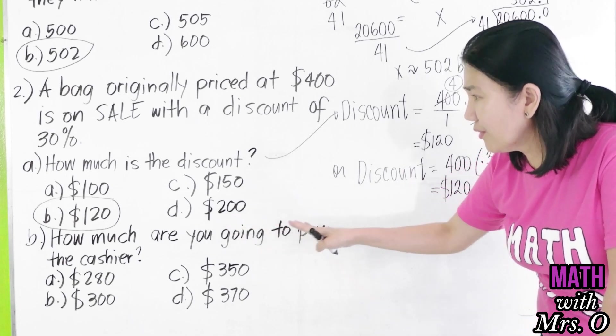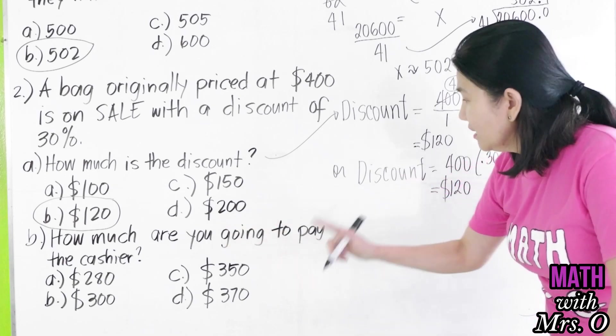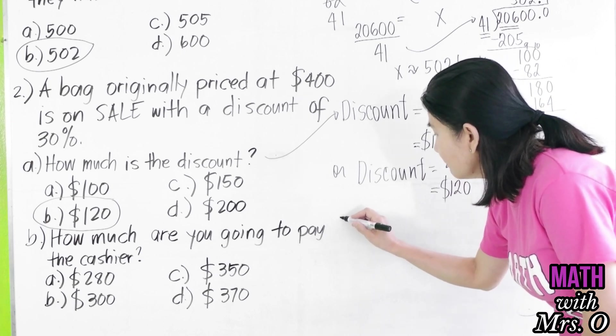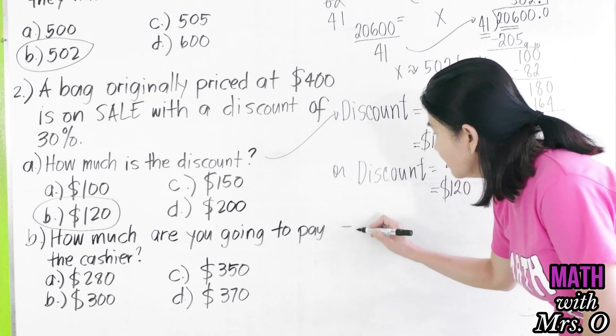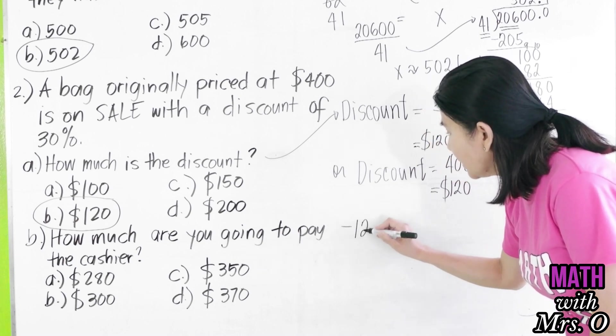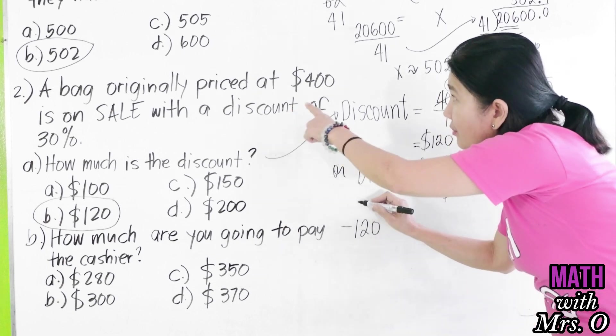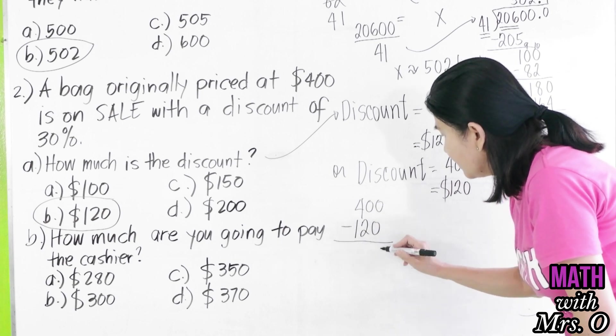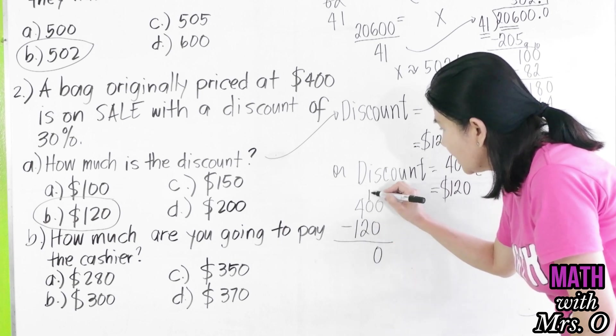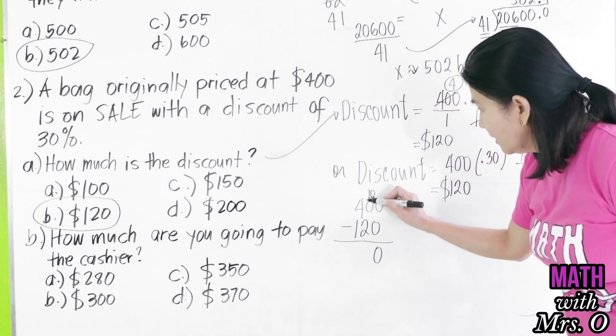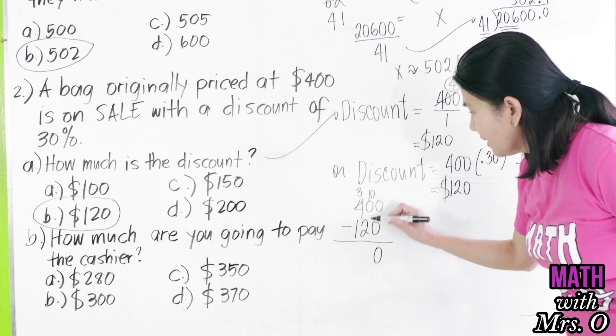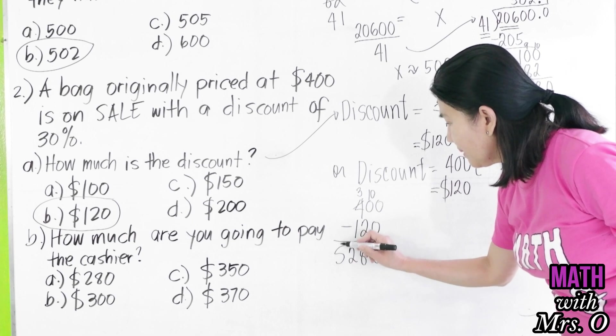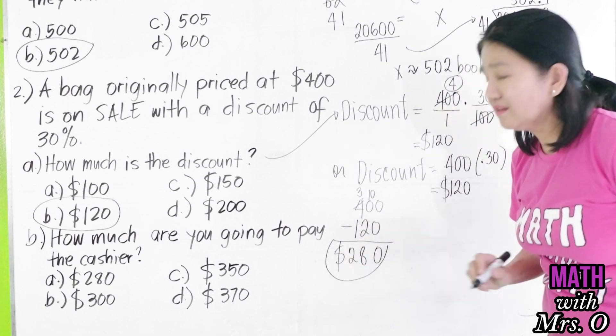Next question, how much are you going to pay the cashier? Remember, you will pay the cashier here by subtracting the discount, which is 120 from the original price, which is 400. So, you get here 0. 0 minus 2 cannot be, borrow 1. It becomes 10. This becomes 3. 10 minus 2 is 8. And 3 minus 1 is 2. So, you will pay the cashier $280.